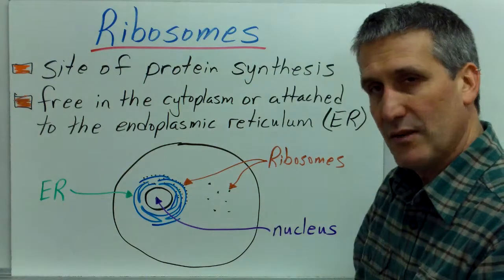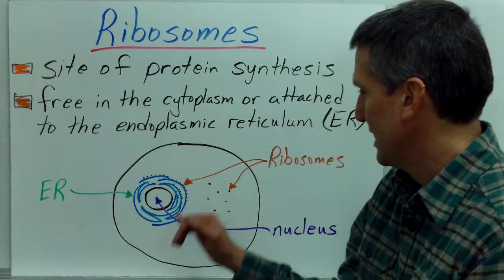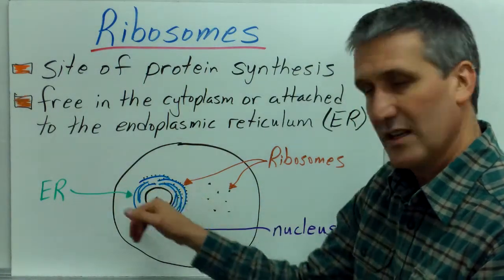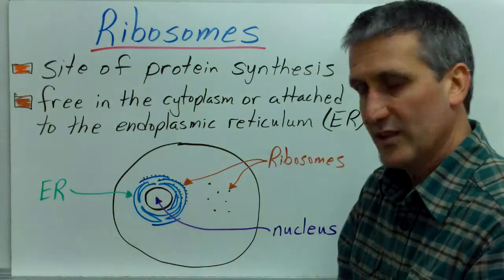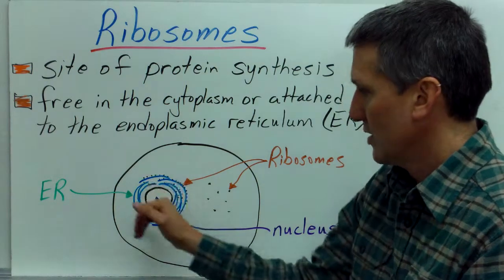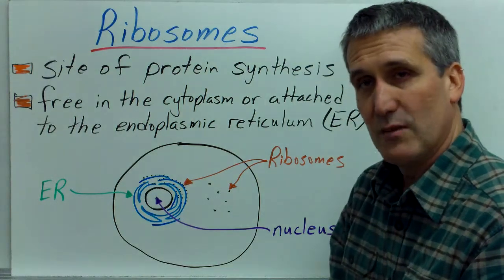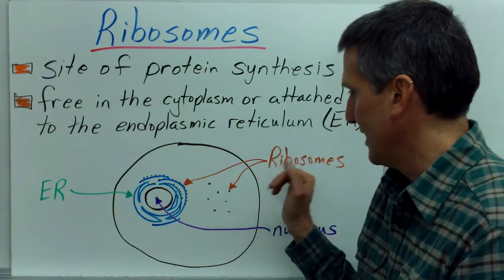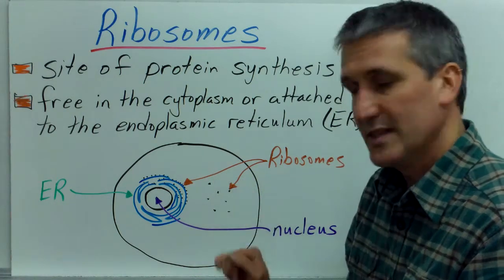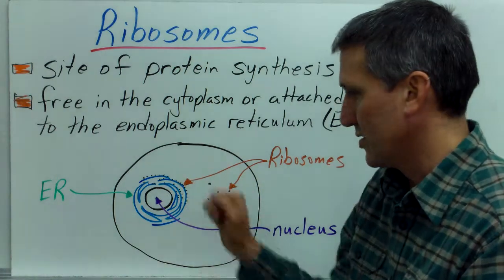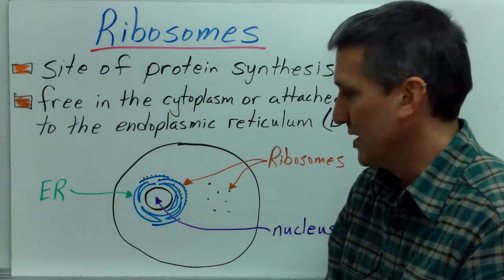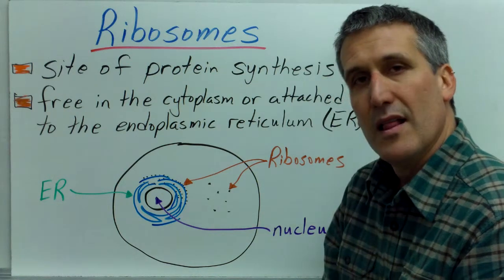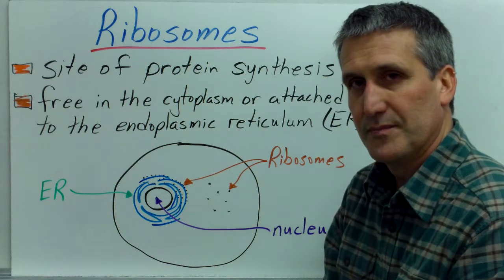Here's a diagram just to give you an idea. This is the nucleus, and this is the endoplasmic reticulum, which is a membrane structure closely associated with the nucleus. This shows free ribosomes in the cytoplasm, but also ribosomes associated with the endoplasmic reticulum.